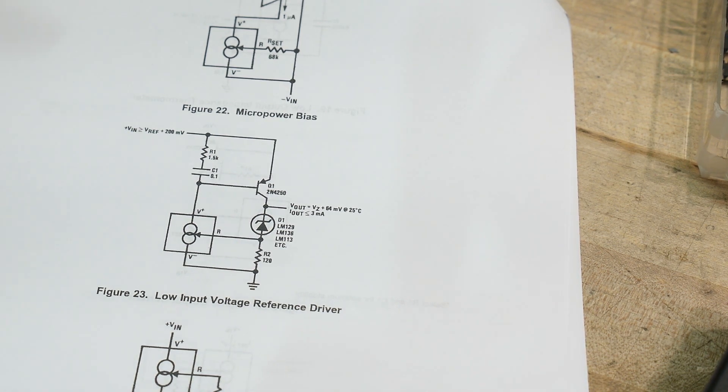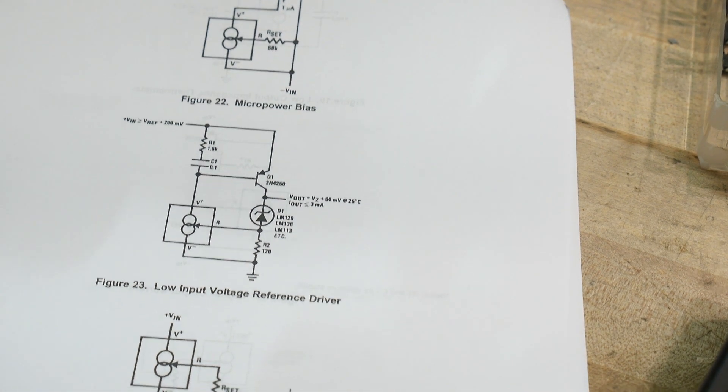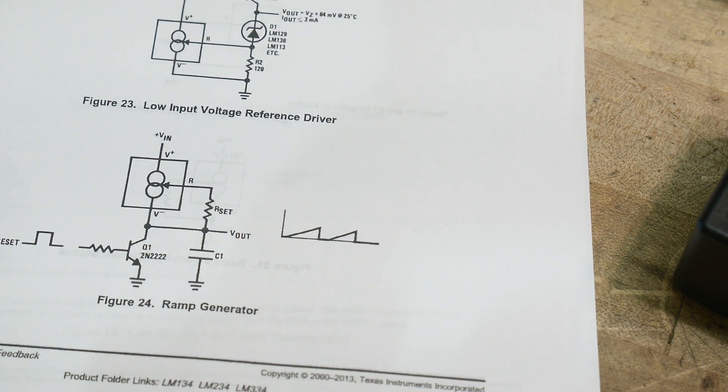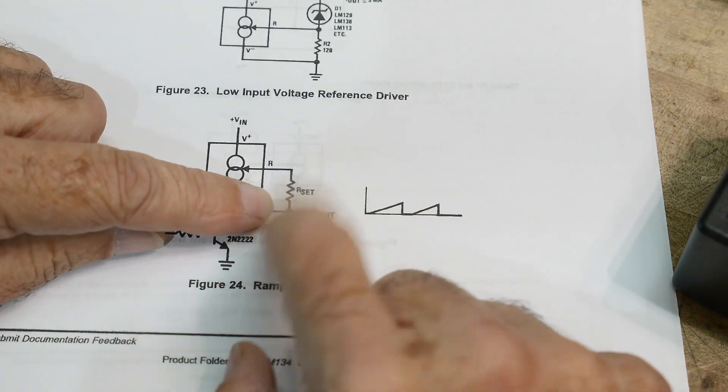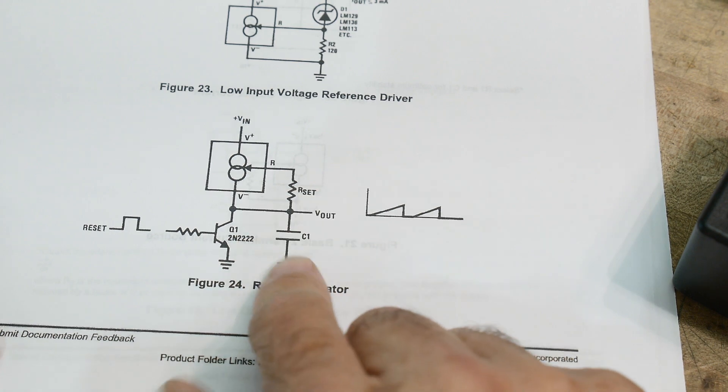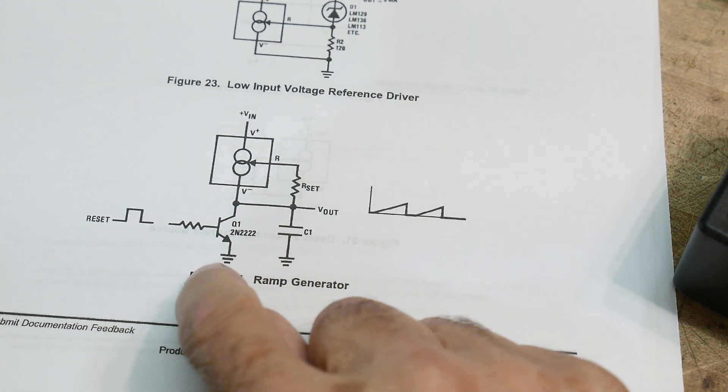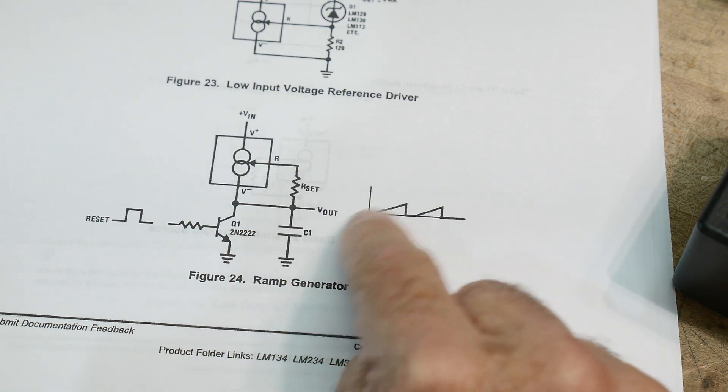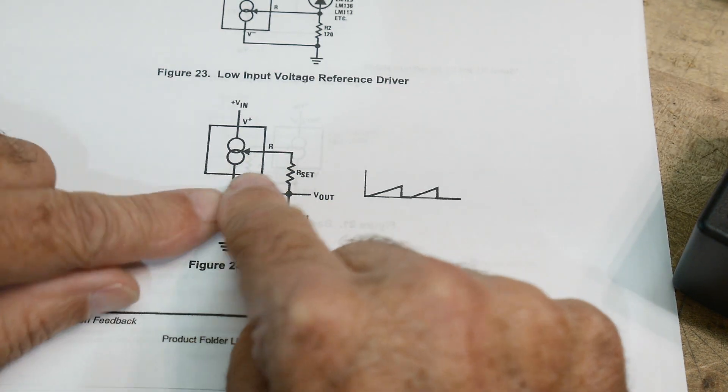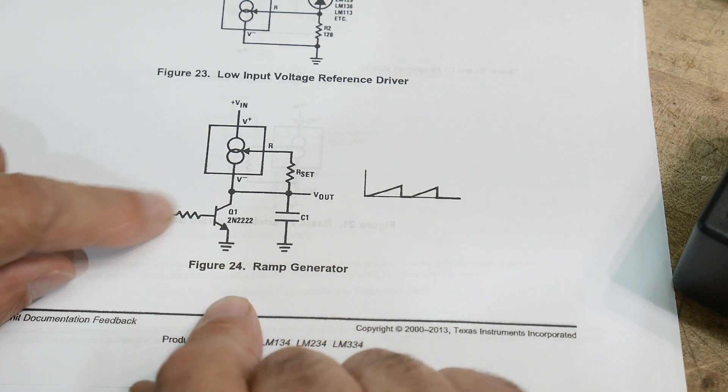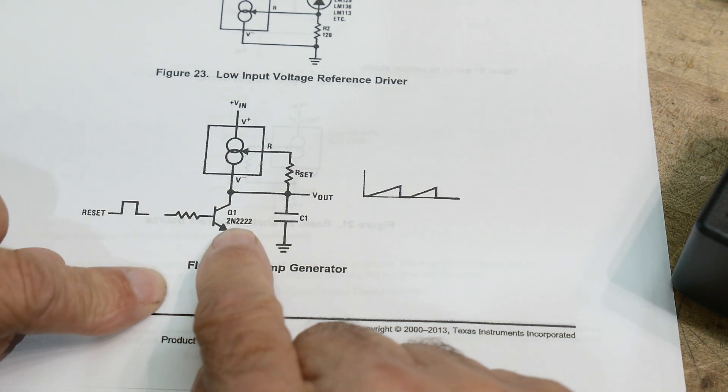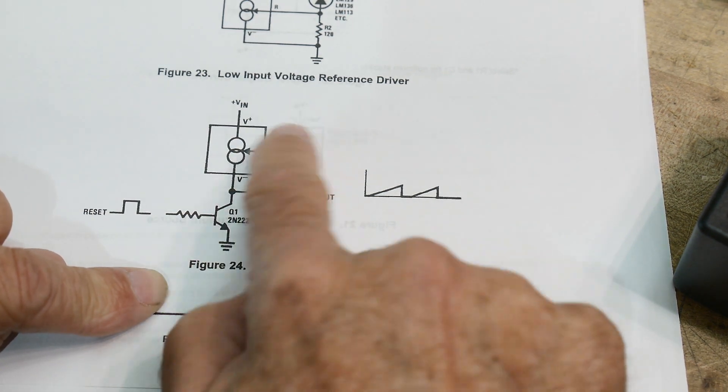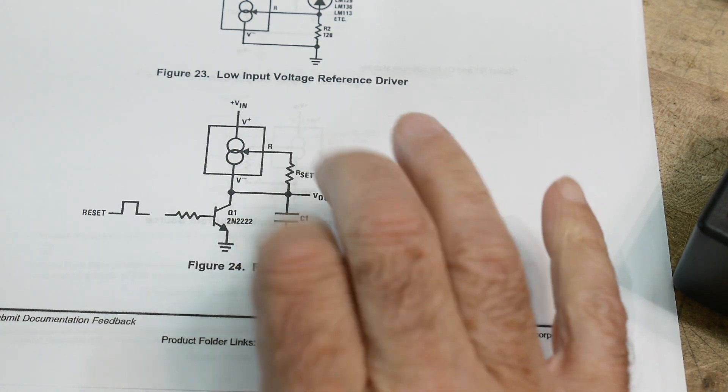Here's a cool one. So if you want to generate a ramp, okay, you can create an integrator. You can integrate the charge on a capacitor, but you need to have a constant current. You need to charge the capacitor with a constant current to get a linear ramp. And so guess what? Here's your constant current, right? And then we're going to gate that on and off with just a 2N2222. So very simple circuit here. I like this one a lot. Ramp generator. Okay. Works great.